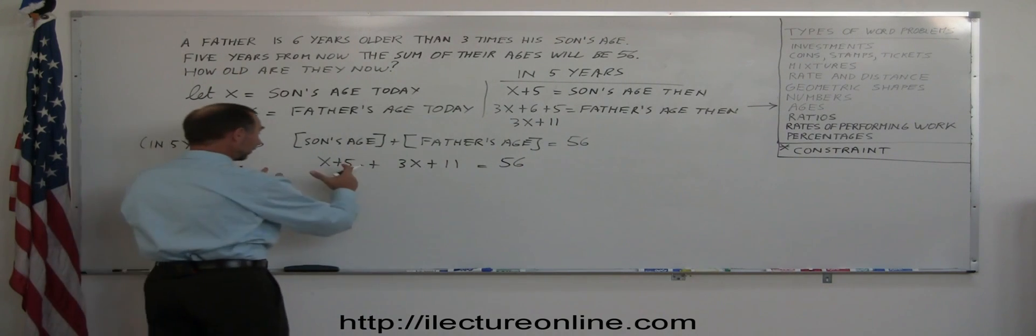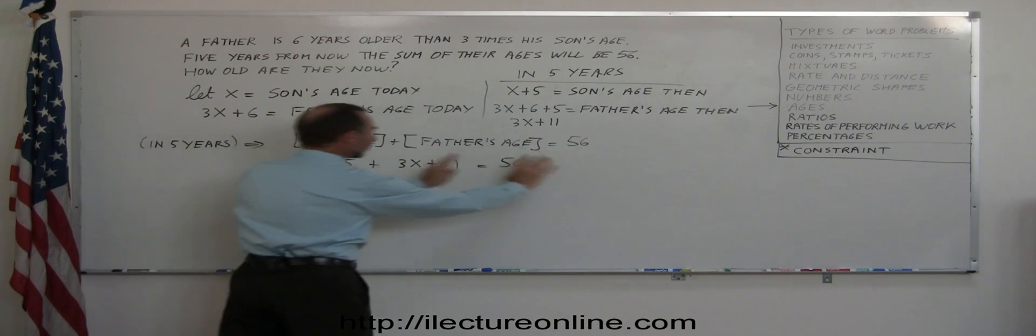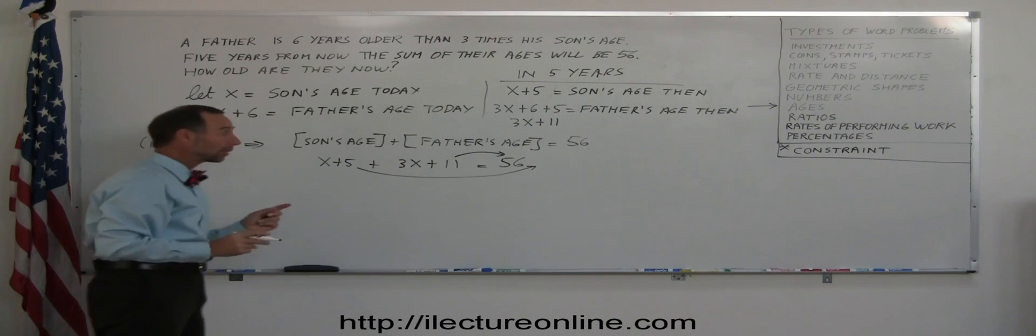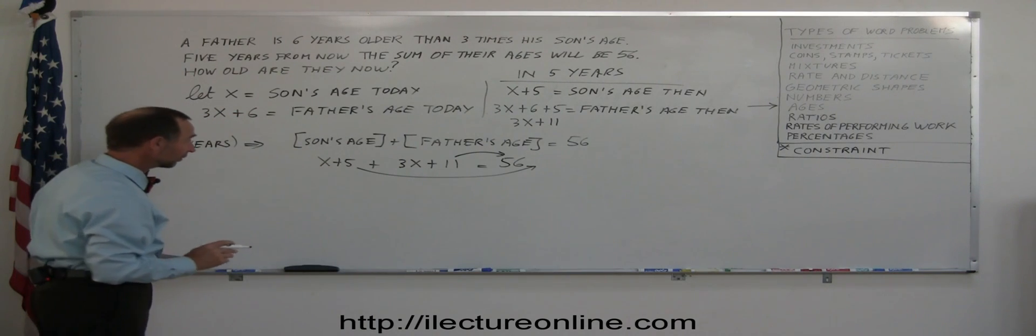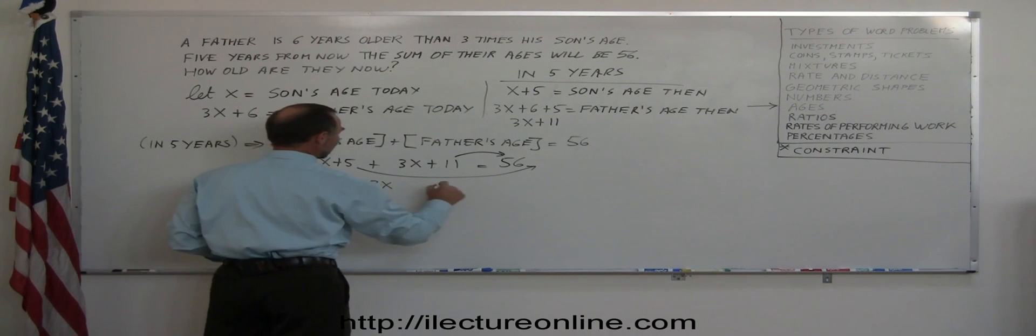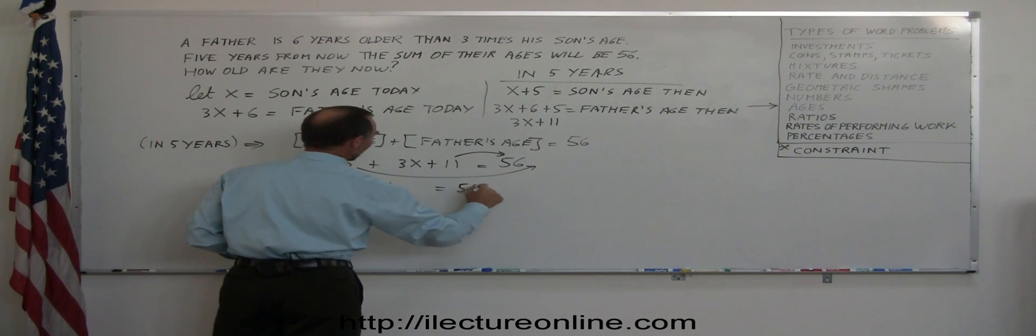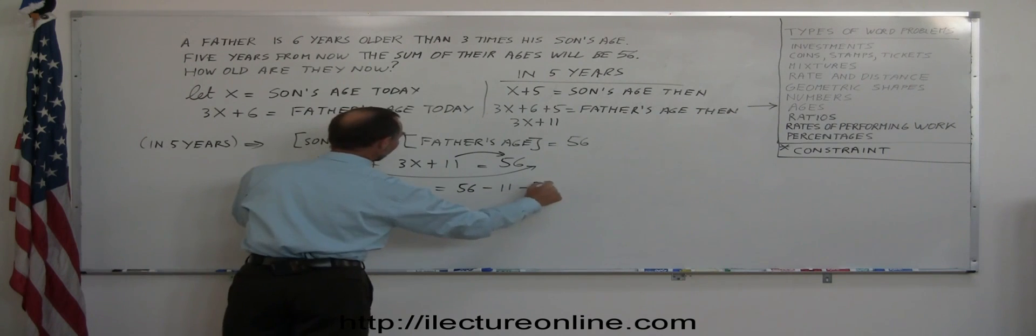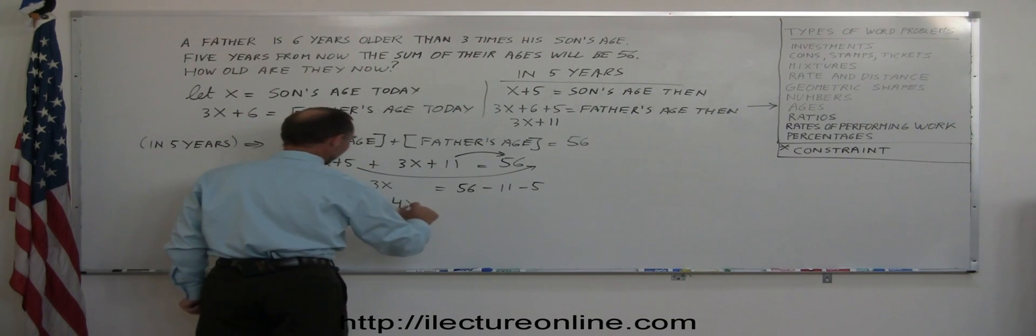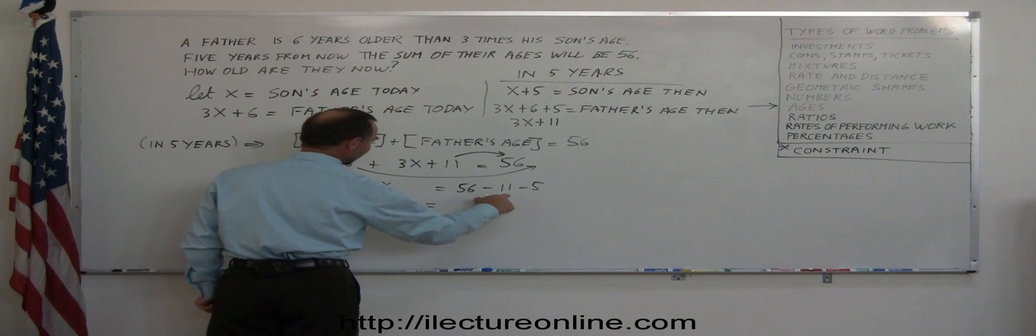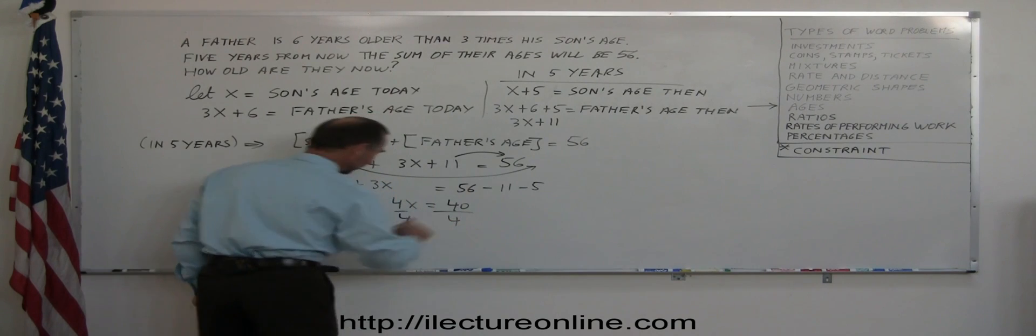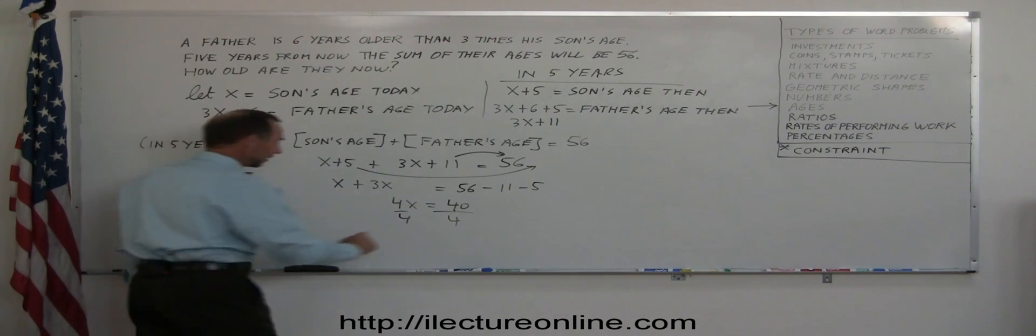Let's put all the X's to the left side. They're already there. All the numbers to the other side. So the 11 goes this way. The 5 goes this way. And again, remember, when we move anything across equal sign, the sign changes. So we get X plus 3X equals 56 minus 11 and minus 5. So combine like terms, we have 4X equals 56 minus 11 is 45, minus 5 is 40. Divide both sides by the coefficient in front of the X. And we have X equals 10.